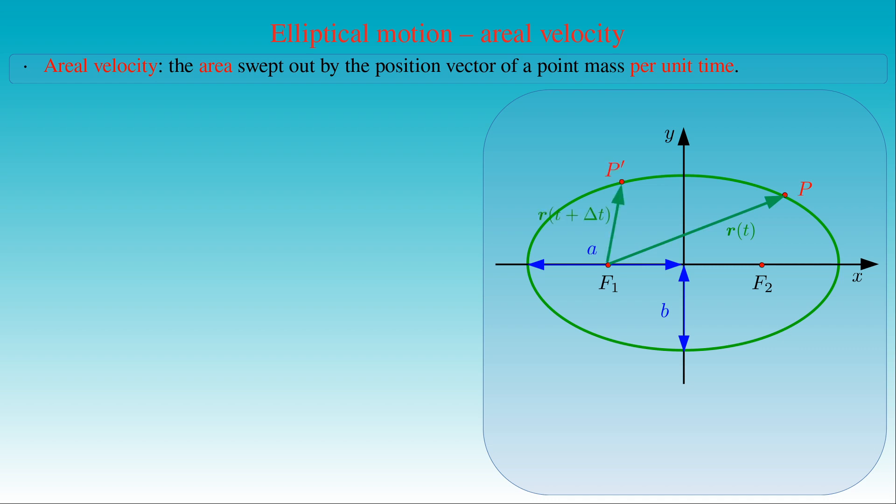Its position vector is R(t + delta t). During the time interval delta t, the position vector of the body sweeps out the area within the ellipse enclosed by the vectors R(t) and R(t + delta t). Let us compute this area.